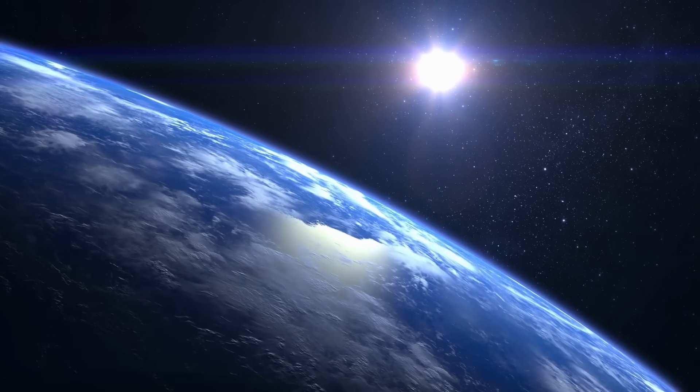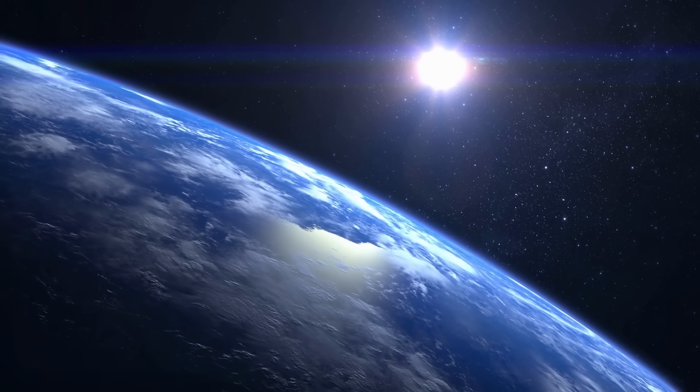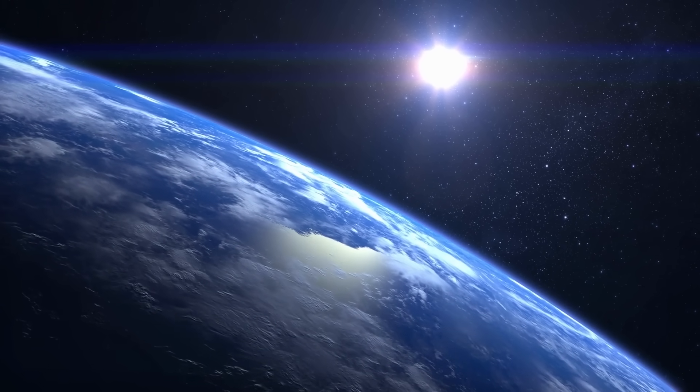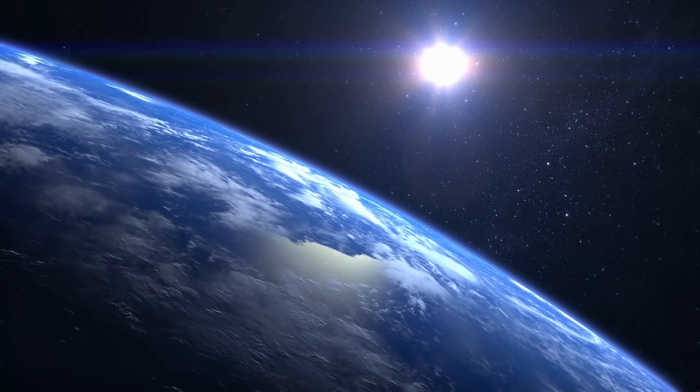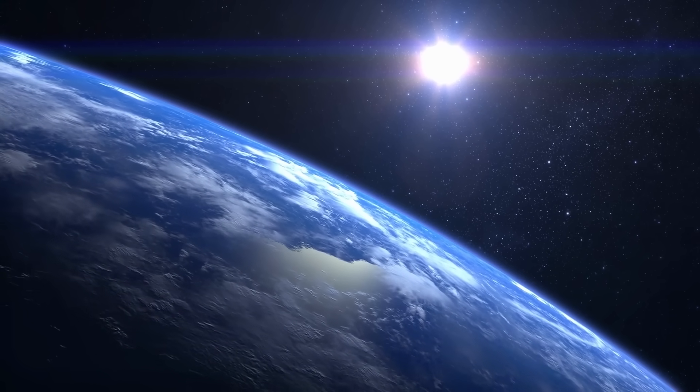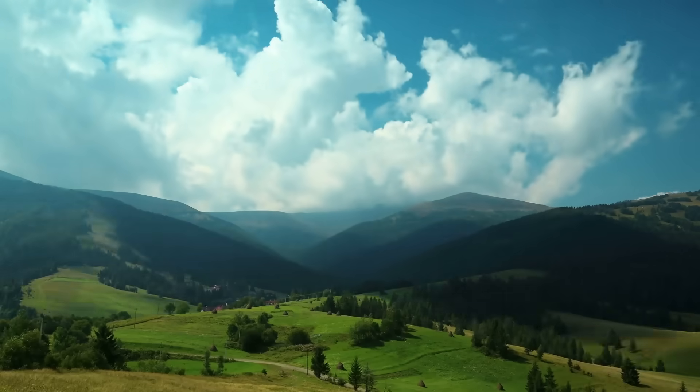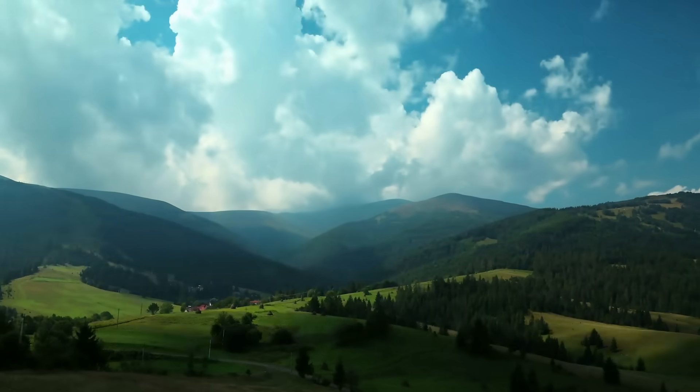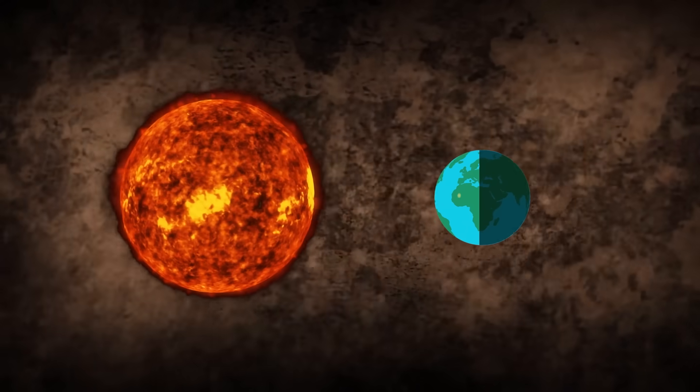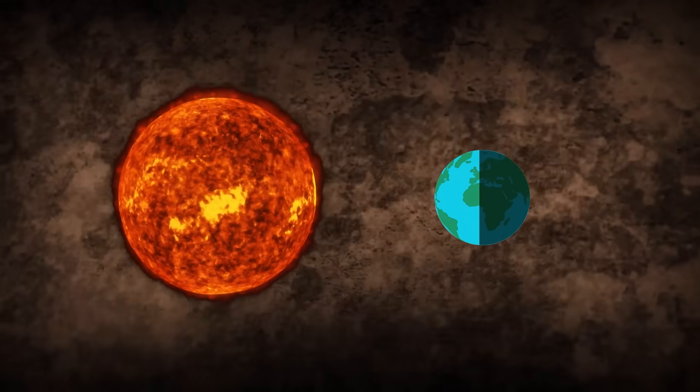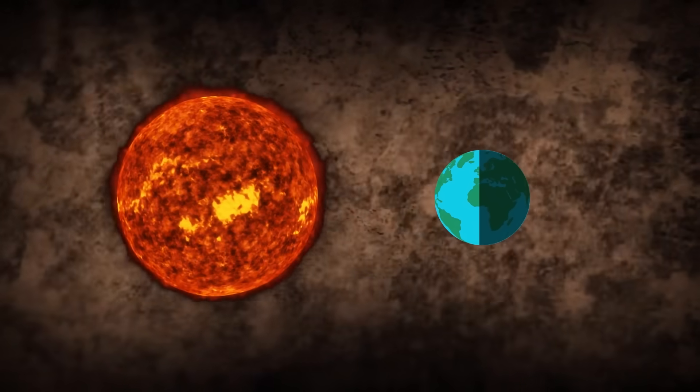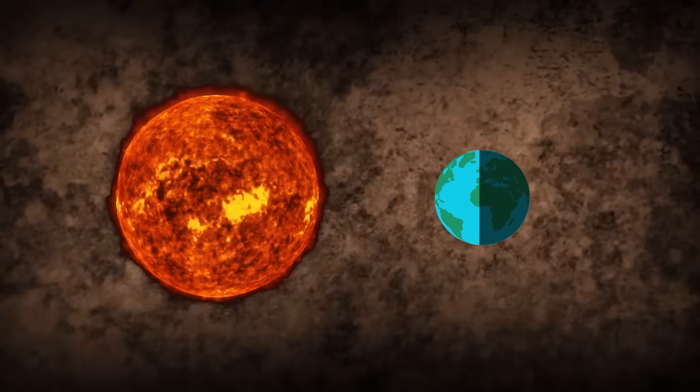If Earth were close enough to Proxima Centauri to be in its habitable zone, tidal coupling might occur. This would mean that one side of the Earth would always face the star while the other would always be in the dark. This would significantly impact weather conditions and life on the planet, as one side would be exposed to radiation and heat from the star while the other would be plunged into darkness and cold.